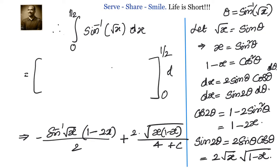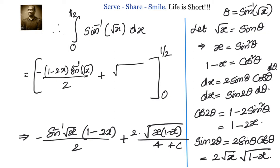We evaluate: [−(1 − 2x)sin⁻¹(√x)/2 + √(x(1−x))/2] from 0 to 1/2. At x = 1/2: (1 − 2·(1/2)) = 0, so the first term vanishes. For the second term: √((1/2)(1/2))/2 = √(1/4)/2 = (1/2)/2 = 1/4.